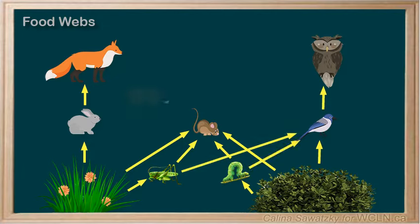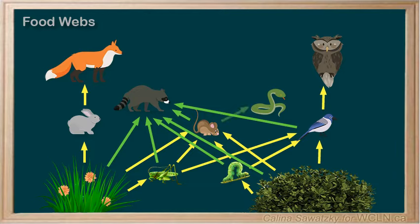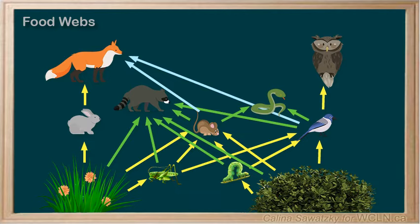A raccoon would gladly eat grass, berries, grasshoppers, caterpillars, and even mice and small birds. A snake would also happily get energy from mice or a small bird. The fox loves rabbits, but would just as happily go after mice or small birds. The owl loves small birds, but would just as happily go after snakes, mice, or even rabbits.